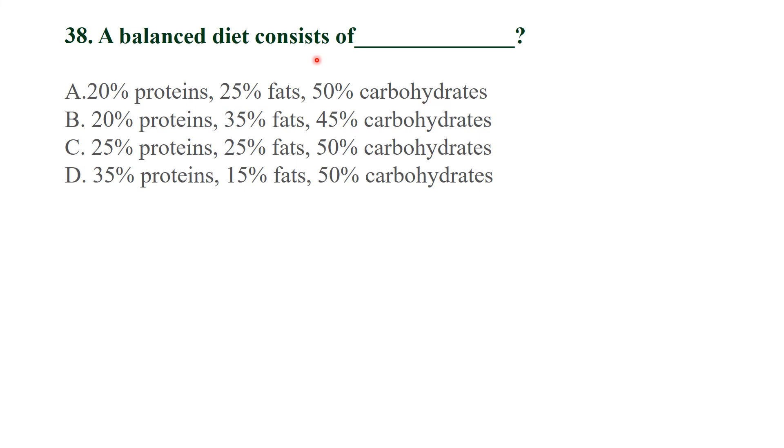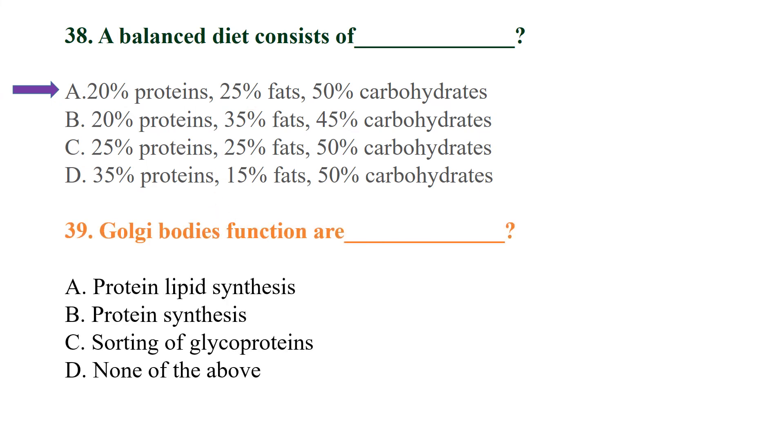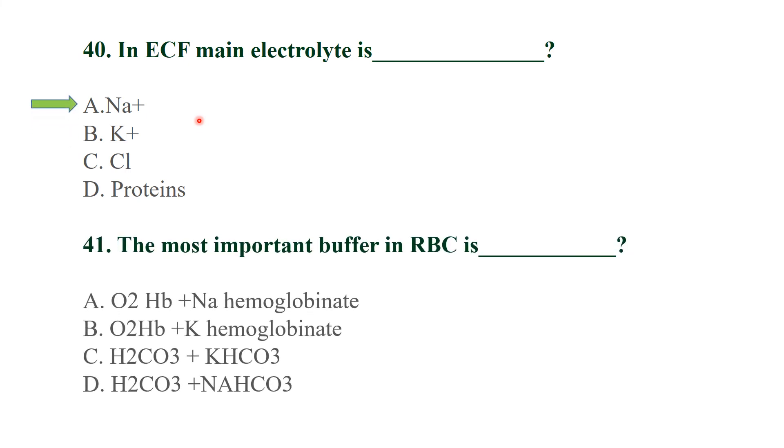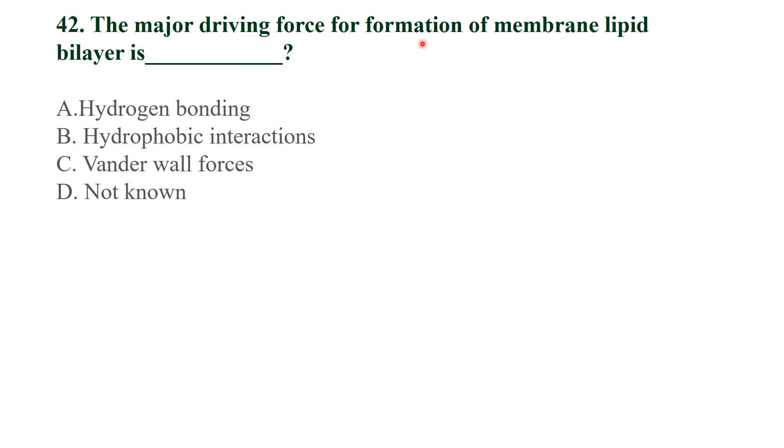A balanced diet consists of 20% proteins, 25% fats, and 50% carbohydrates. Golgi bodies function in sorting of glycoproteins. In extracellular fluid, the main electrolyte is sodium. The most important buffer in RBCs is H2CO3 carbonic acid and sodium bicarbonate.